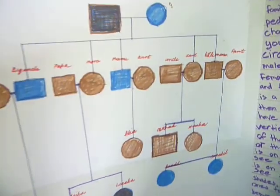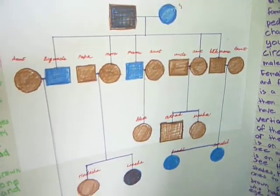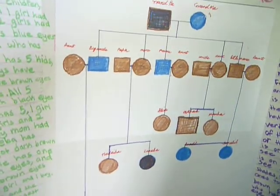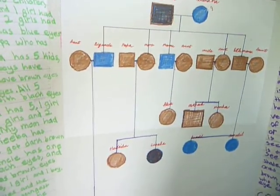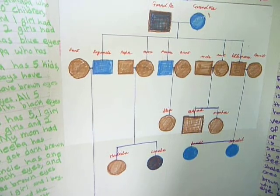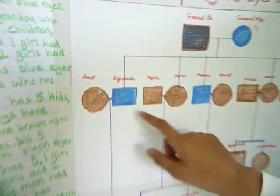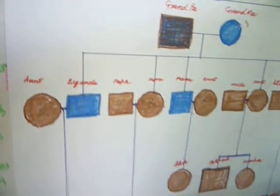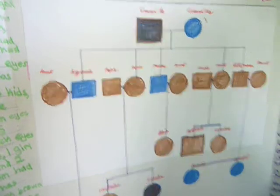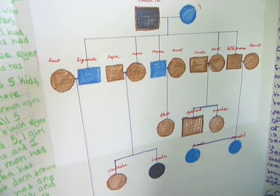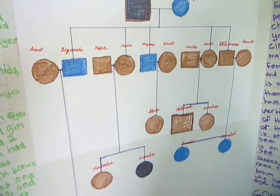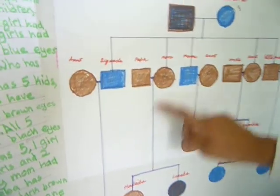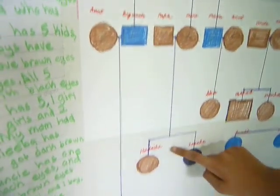To know if the male and female are married, there is a horizontal line connecting them, right here. And to know if they have offspring, there is a vertical line, right here.